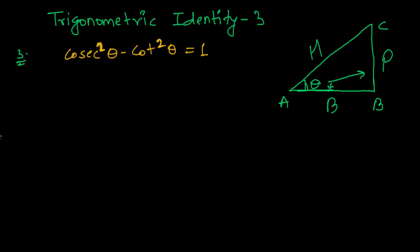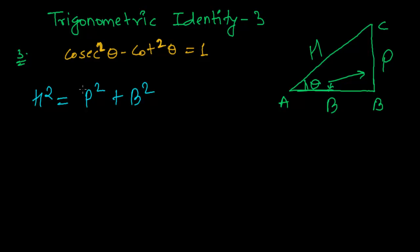Let's use the Pythagoras theorem on this triangle. In this right angle triangle, using the Pythagoras theorem: h squared is always equal to perpendicular squared plus base squared. The square of the hypotenuse is always the sum of the perpendicular squared and the base squared.